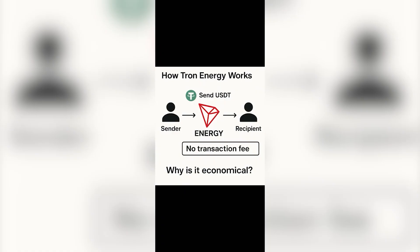Here is the process you are seeing on the screen: Sender → Energy → Recipient. Energy acts like prepaid fuel. So when you send USDT, the cost is taken from your energy balance, not from your TRX. Why is this important? Because energy is cheaper than burning TRX directly. You keep your TRX untouched — no freezing for three days, no locking your funds, no constant spending. You simply pay a small fixed amount, get enough energy for 2, 10, or even 40 transactions, and your transfers become almost free.